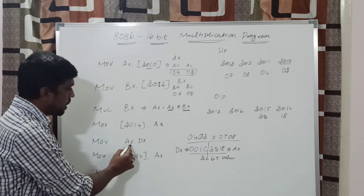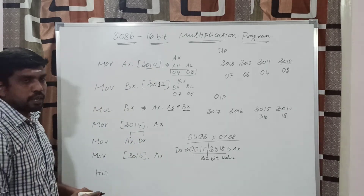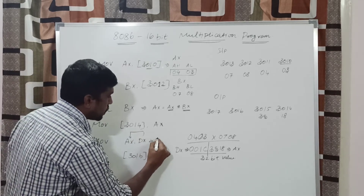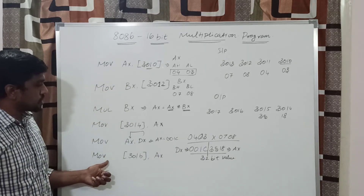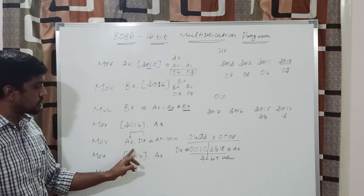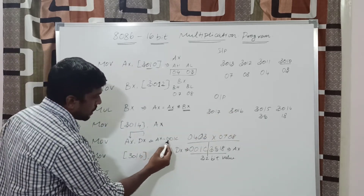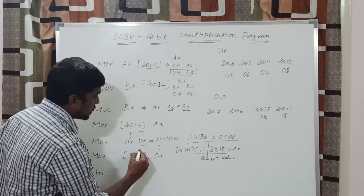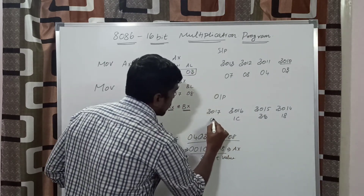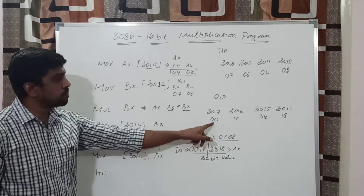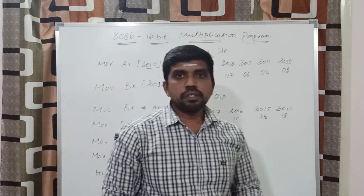The next instruction is MOV AX, DX. Whatever value is present in DX, that content is first stored in AX. Now the AX value is 001C. The next instruction transfers whatever value is present in AX to the successive memory locations 3016 and 3017. The AX value is 001C — after execution, 3016 contains the data 1C and the next memory location 3017 contains 00. The final instruction is HALT, which declares the end of the program.